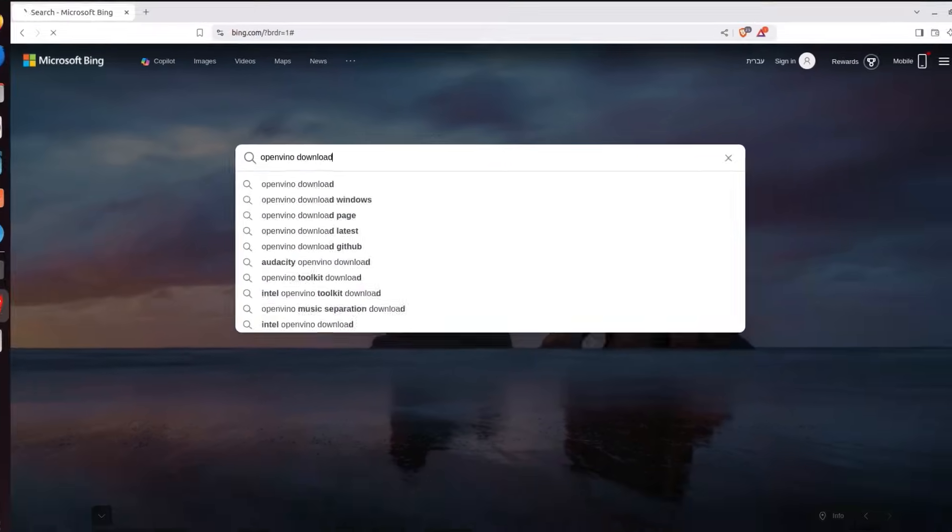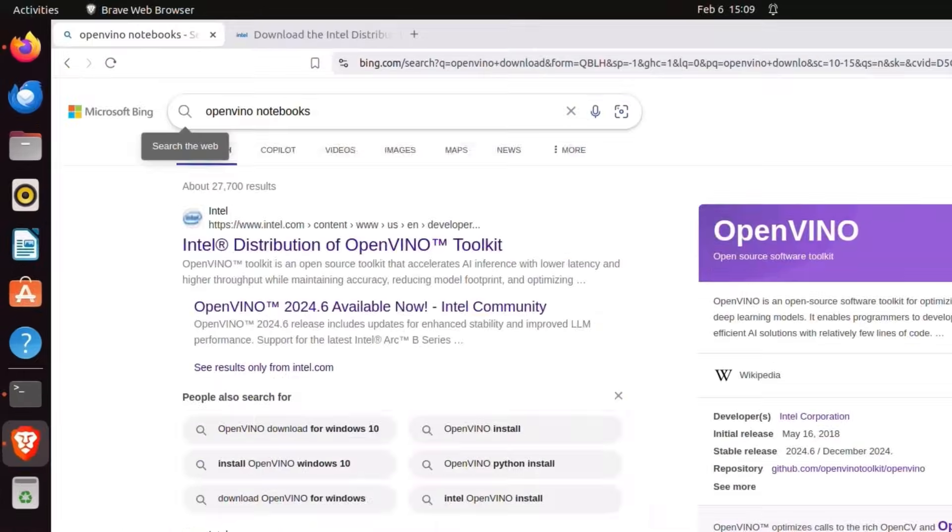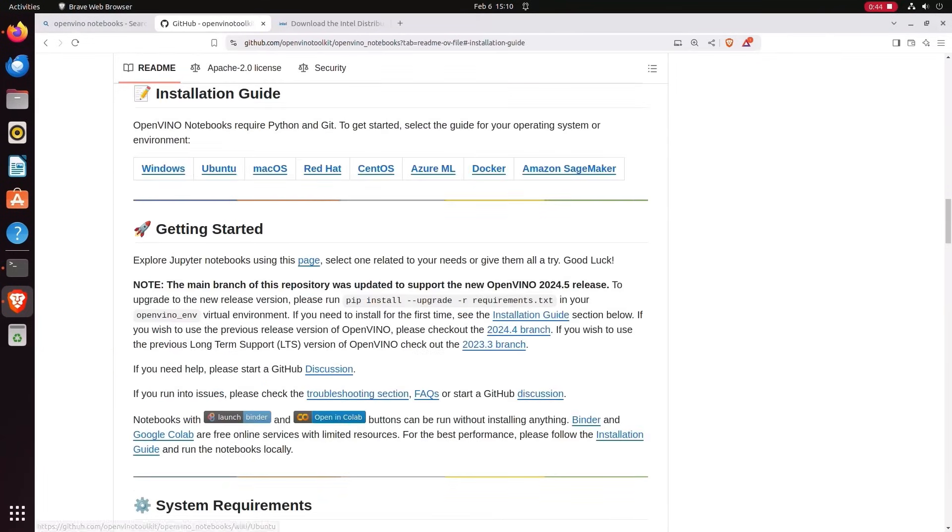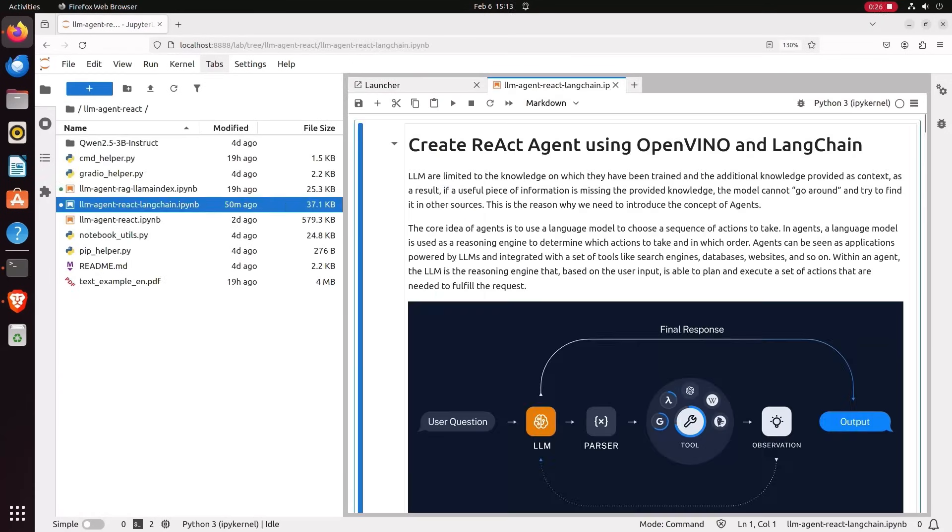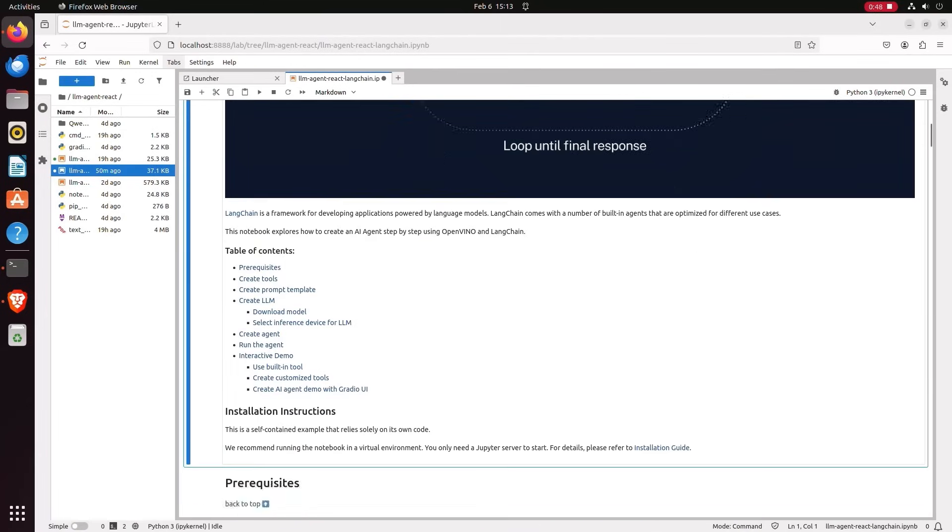Search for OpenVINO. Download. Many ways to install. The virtual environment is my preferred choice. Activate, upgrade, and install. Look for the OpenVINO notebooks and just follow the installation guide. I'll run the agent react notebook. Link below. And I'll choose the react lang chain.